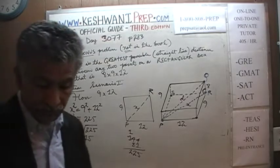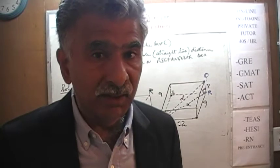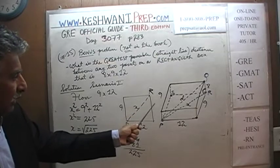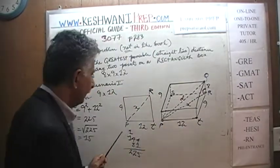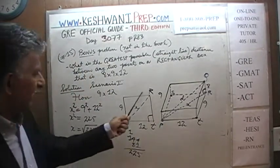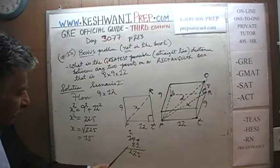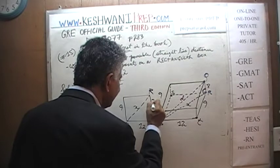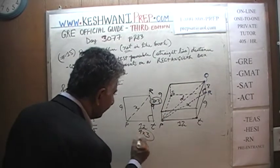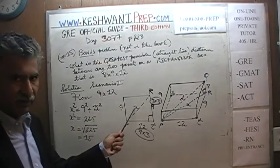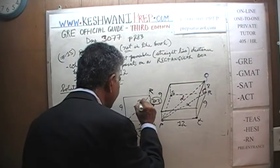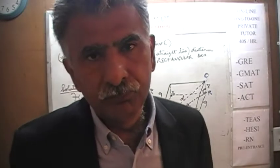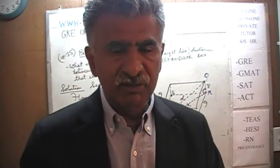Did you notice anything? We should have noticed something — had we been paying attention, we wouldn't have had to do this work. This triangle P-R-T is a 3-4-5 triangle. We didn't have to do any of this. This side is 9, which is simply 3 times 3. This side is 12, which is simply 4 times 3. So X would have to be 5 times 3 — the diagonal would have to be 15. It's a 3-4-5 triangle incognito, just scaled up to 300%.